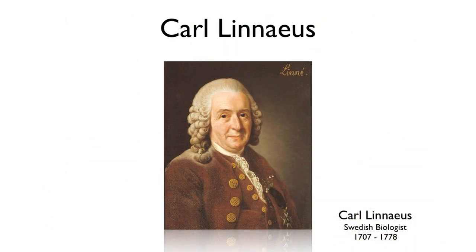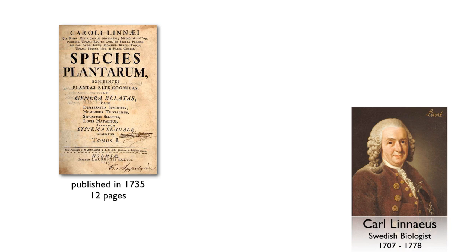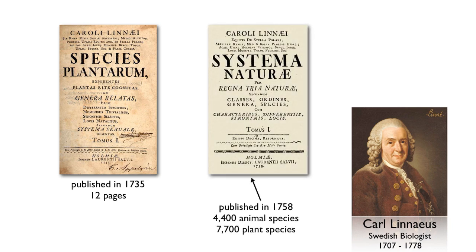Onto the scene comes Carl Linnaeus, a Swedish biologist who had his first foray into taxonomy in 1735 in a relatively small volume about plants — it was only 12 pages long. But he followed this up with Systema Naturae. The 10th edition, published in 1758, included 4,400 animal species and 7,700 plant species. Linnaeus was not the first person to use what we now call binomial nomenclature, but he was the first person to use it consistently in a way that made sense.